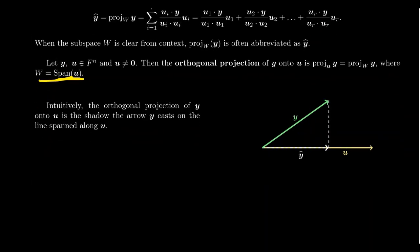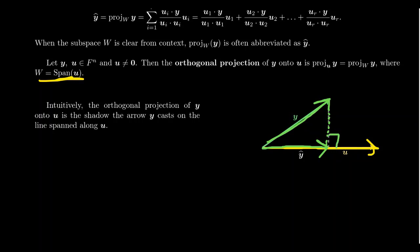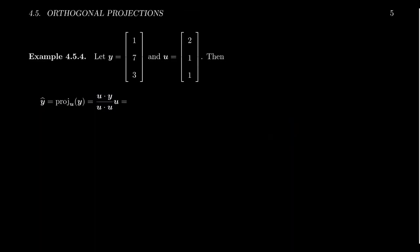Intuitively, the idea is this: you have some vector y, and then another vector u. The vector y casts a shadow in the direction of u, and the orthogonal projection is that shadow — the vector that goes in the direction of u. The reason we call it the orthogonal projection is that the angle between these vectors is in fact a right angle, as we'll see very shortly.